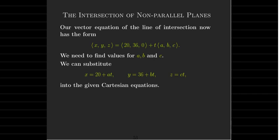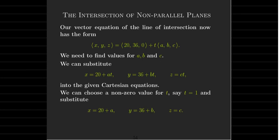And we could look at the parametric equations and say that we don't need to have t as just a variable. We can choose a non-zero value for t, like t equals one.